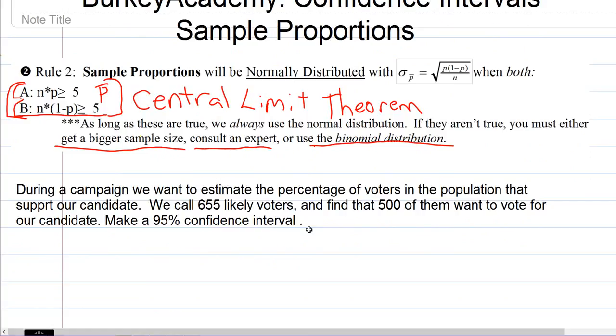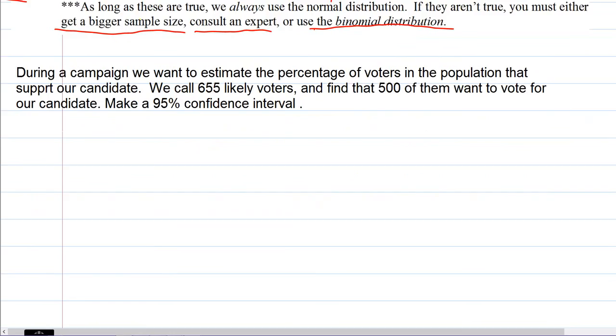We need to write the formula for a confidence interval, and it's very similar to making a confidence interval for a population mean. It's our sample estimate, p bar in this case, plus or minus a z score times a standard error. In this case it's not a standard error for a sample mean, it's a standard error for a proportion.